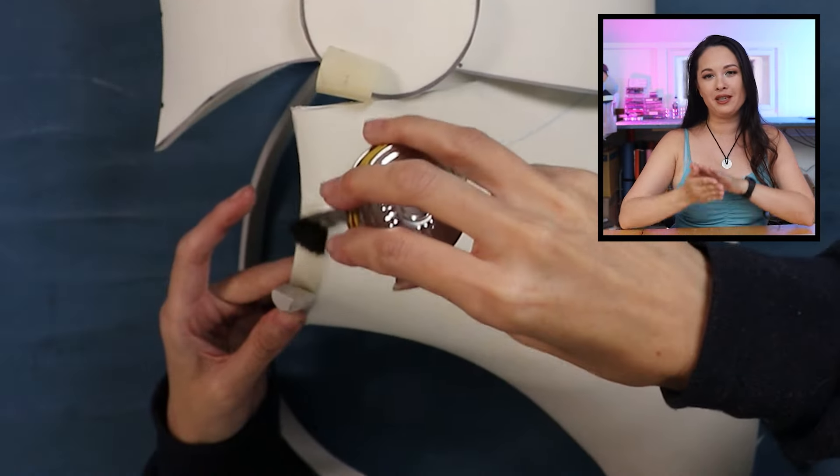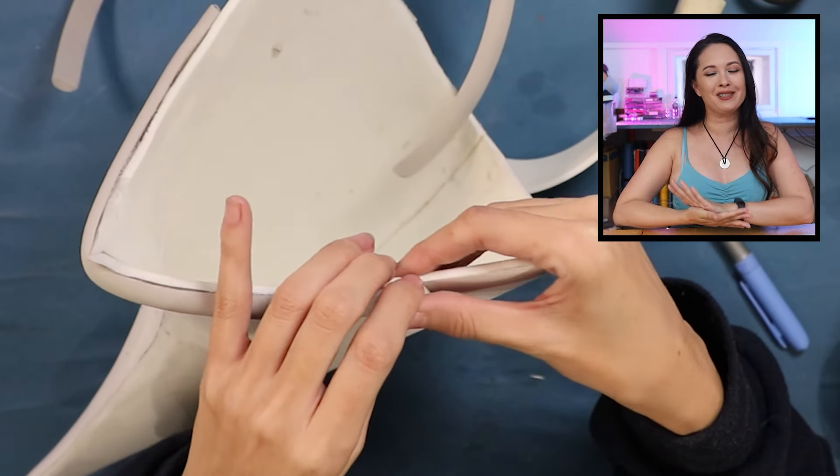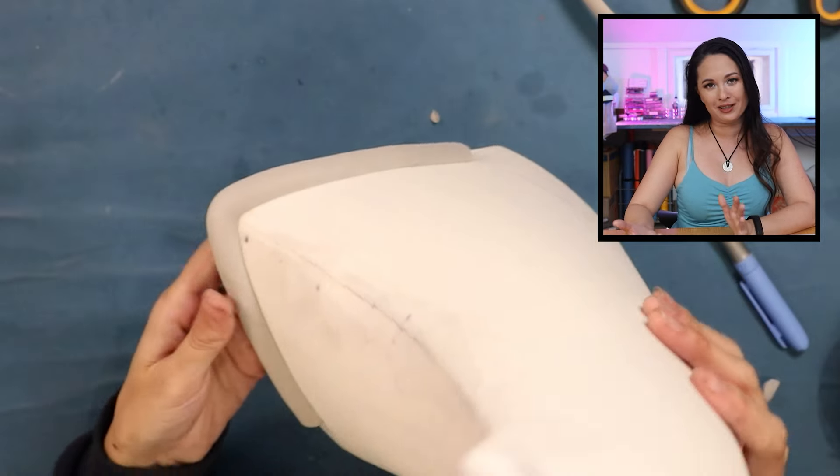Try to glue your trim flush with the bottom of the hat base. I'm going to sand it later, but it really cuts down your sanding time if you line it up as well as you can in this phase.